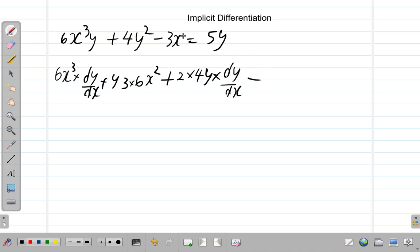Alright. Minus. When we differentiate 3x, we get 3 equals, you know, 5y. So, when we differentiate 5y with respect to y, what we get is just 5. Multiplied by the derivative of y with respect to x, which is dy by dx.